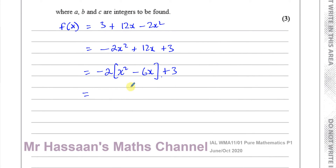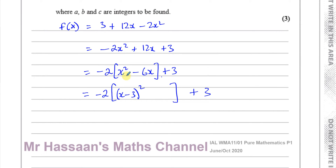Now I'm going to complete the square for what's inside this bracket, then keep the +3 at the end. To complete the square, you write a bracket that is something squared. I write (x - 3)², taking half the coefficient of x. If I expand this, I get x² - 6x + 9. But there's no +9 in the original, so I take away that 9. So (x - 3)² - 9, when expanded, gives x² - 6x + 9 - 9 = x² - 6x. That's exactly what I want.